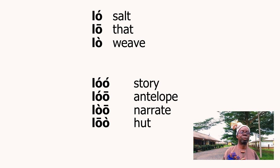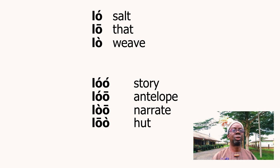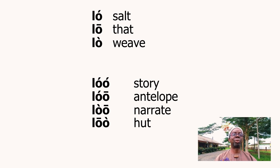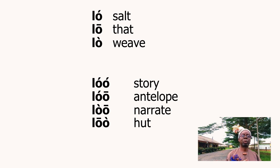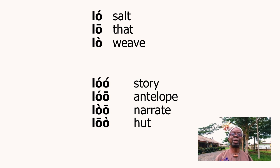We can also look at the following words: Low with a high tone means soft. Low with a mid-tone means that. And Low with a low tone means weave. Then with a two-syllable word you can have two tones on the syllables. For example, Low — L-O — with two syllables: the meaning being story. Low means anti-love, then Low means narrate, then Low means hot. So that is where we stop today, ladies and gentlemen. Thank you for watching.